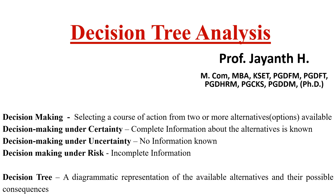Decision trees are done with the help of decision making. Decision making means you select a course of action when there are different kinds of options available. There are three different types: decision making under certainty, decision making under uncertainty, and decision making under risk. When you have complete information about a problem, it is certainty. When there is no information known, it is uncertainty. When there is incomplete information, that is risk.